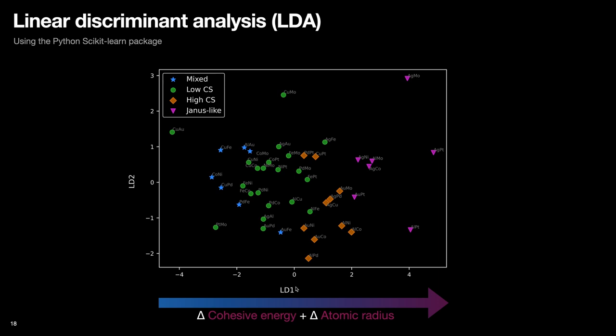And if we look at this first axis and read what features are predominantly constituting this axis, we find that they are the cohesive energy difference and atomic radius difference. So essentially, the LDA analysis results show that the deciding factors of the final structures we see in the MD results are the cohesive energy and atomic radius difference.